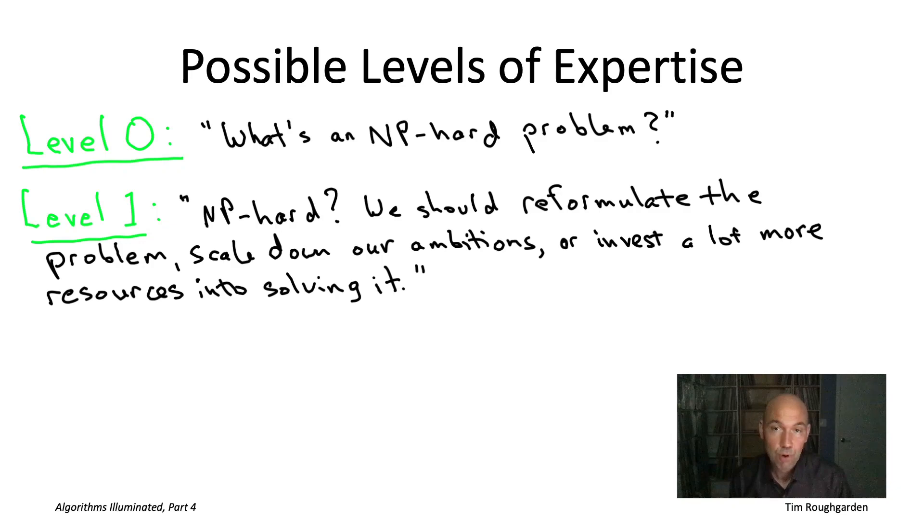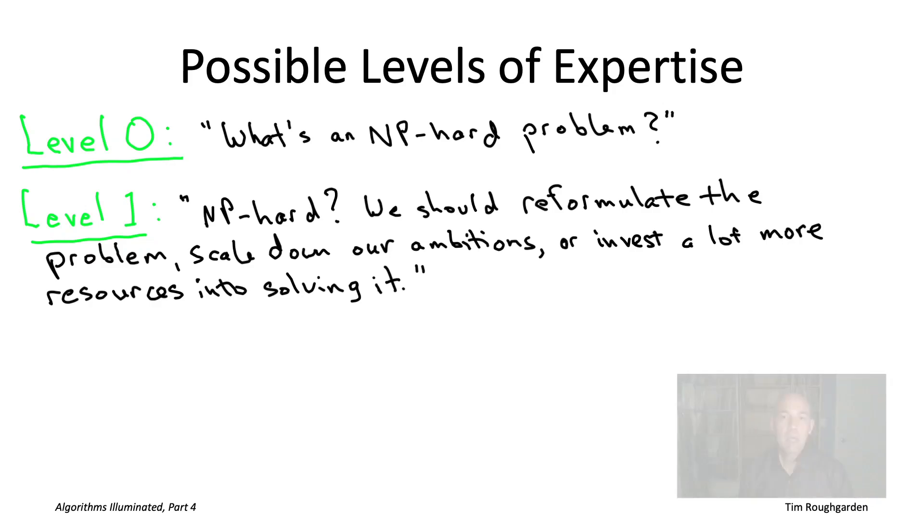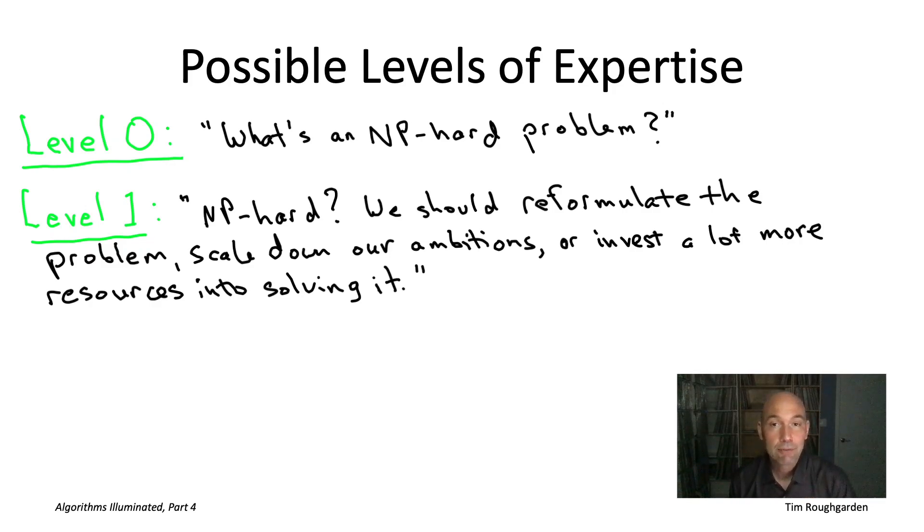For example, if you're managing a software project that has an algorithmic component, you're going to want to have at least level one expertise in case one of the engineers on your team tells you that they've encountered an NP hard problem in the course of the project. If you're content to stop at level one, it's sufficient to just read chapter 19 of the book or watch this initial sequence of videos.